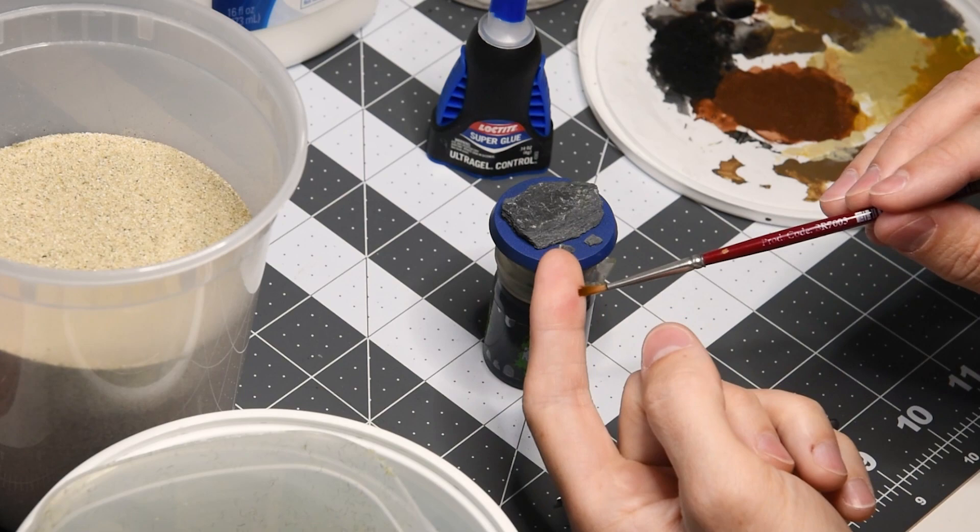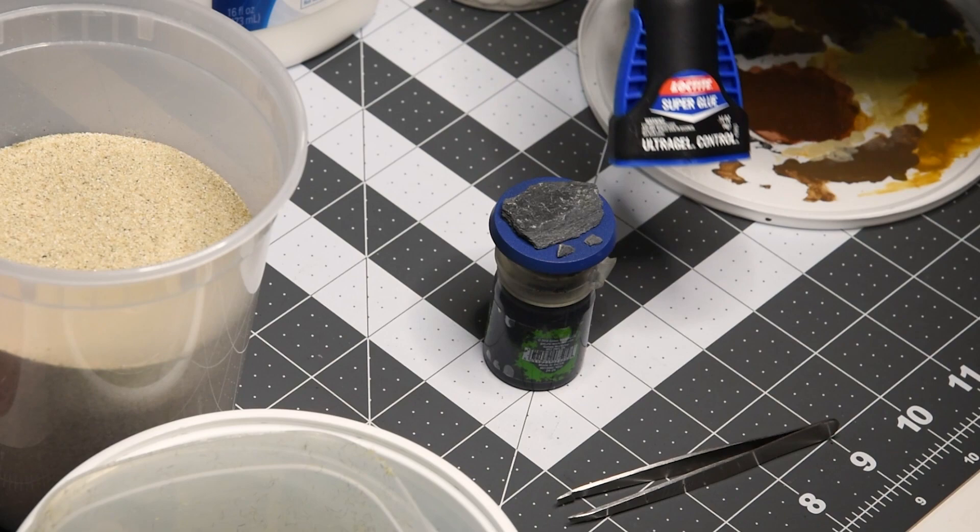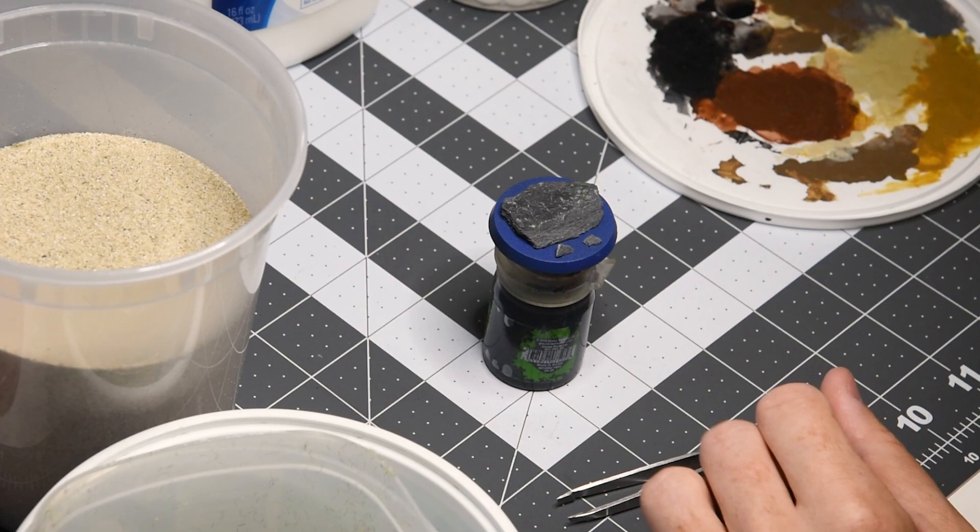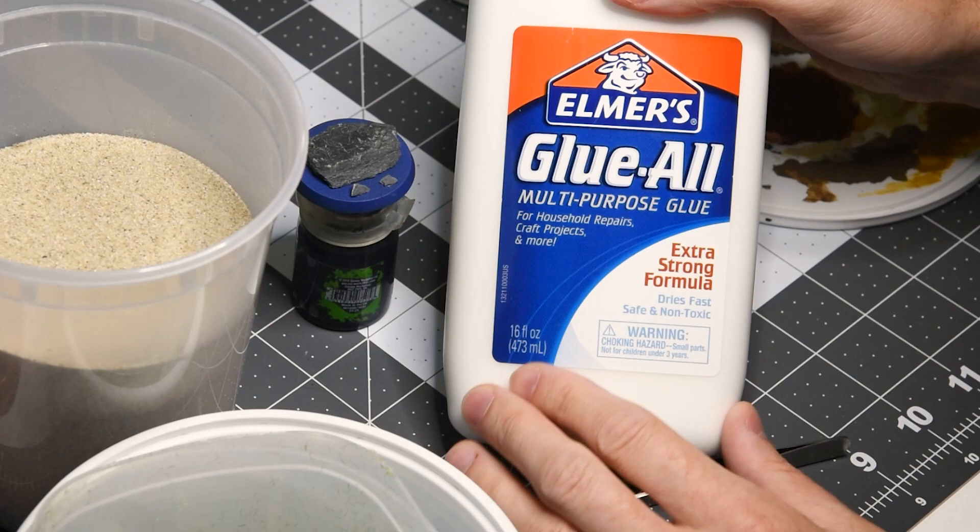So let's take a look at the materials needed. We start with a synthetic hair brush here. We'll also need some super glue and the brand of glue doesn't matter too much. The next thing we're going to need is PVA glue. I'm just using Elmer's here, the extra strong formula.